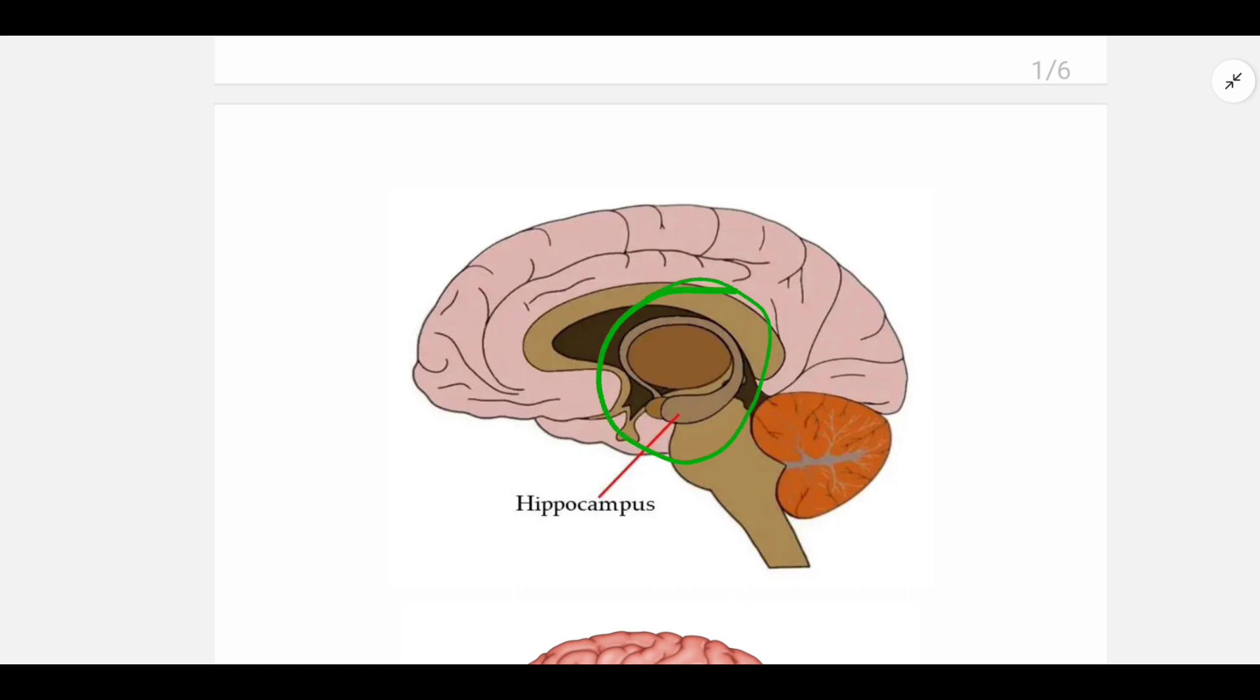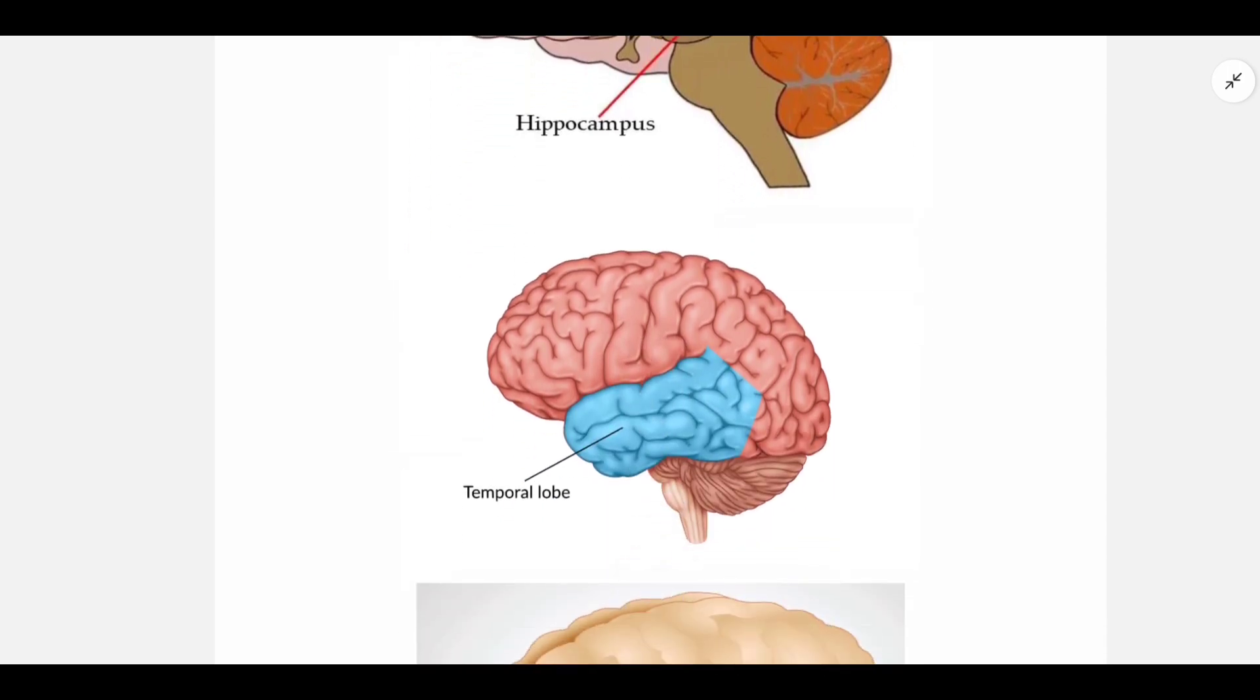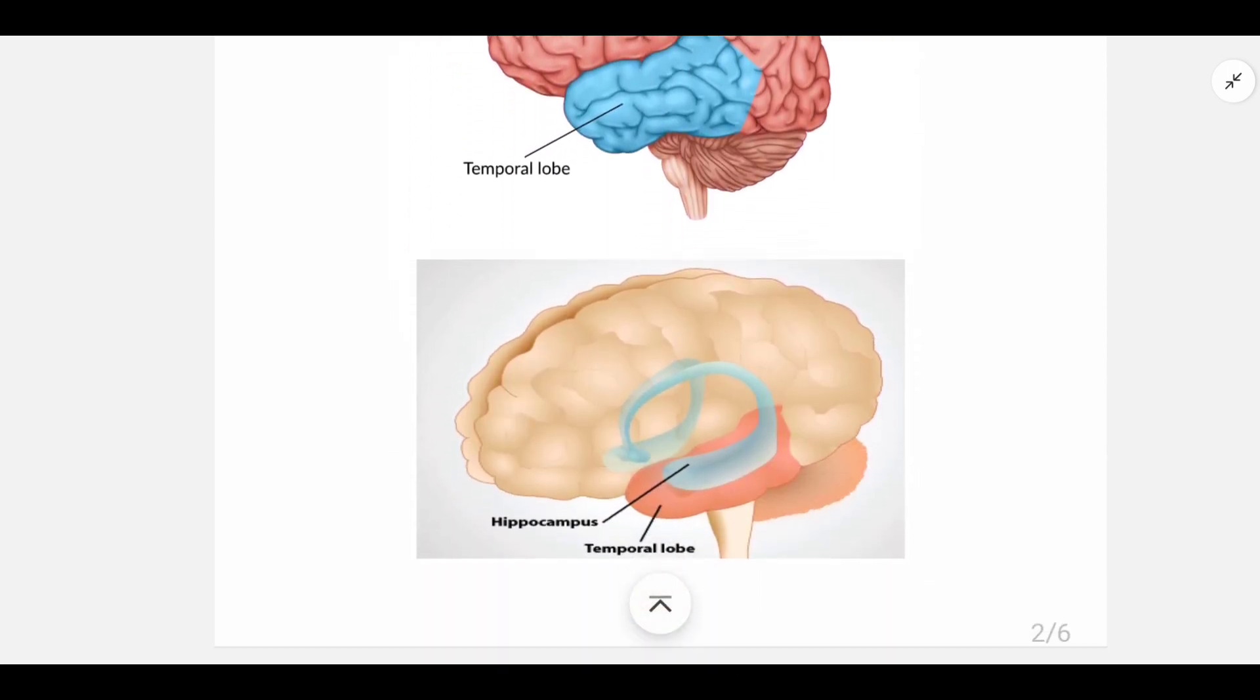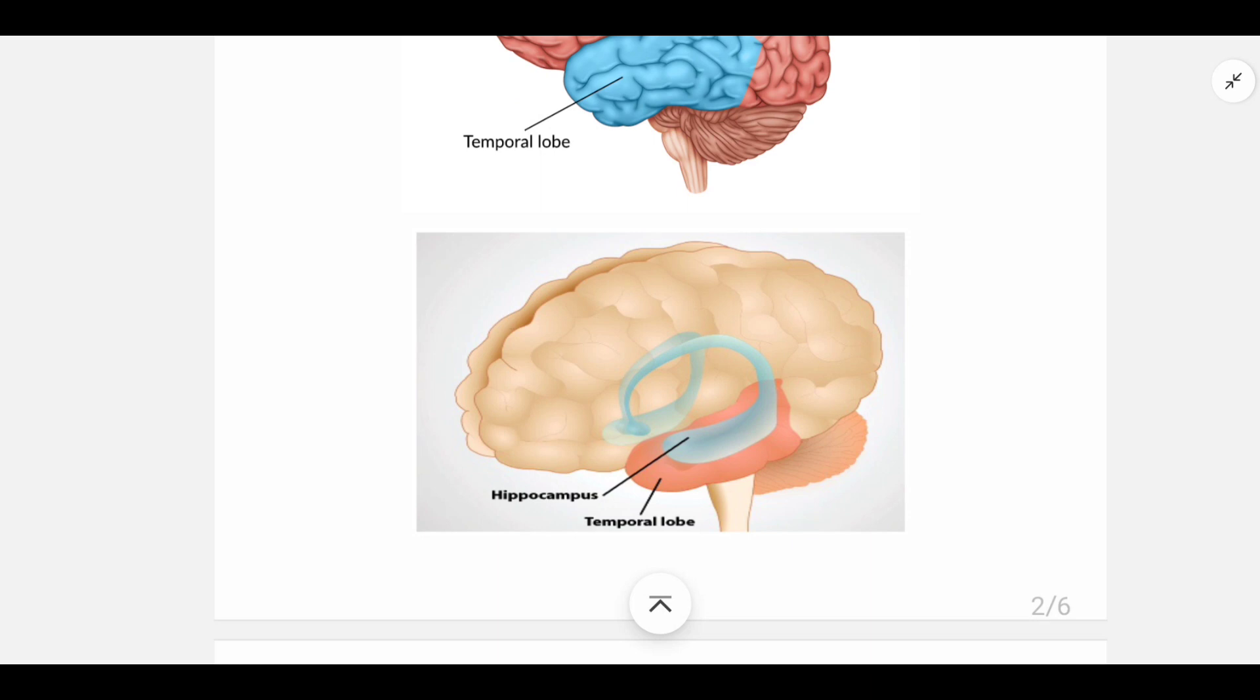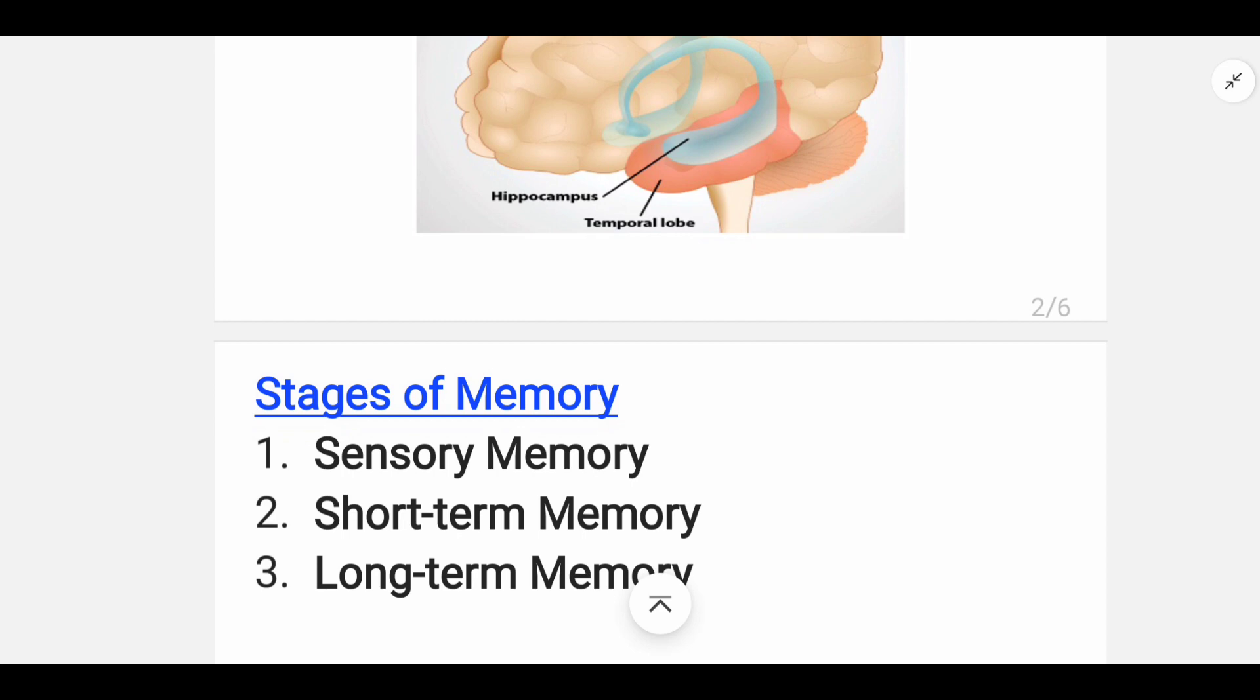You can see in the diagram, this is the part which is the hippocampus. This is located in our temporal lobe. You can see the last picture, this is our temporal lobe, and here this part is the hippocampus.